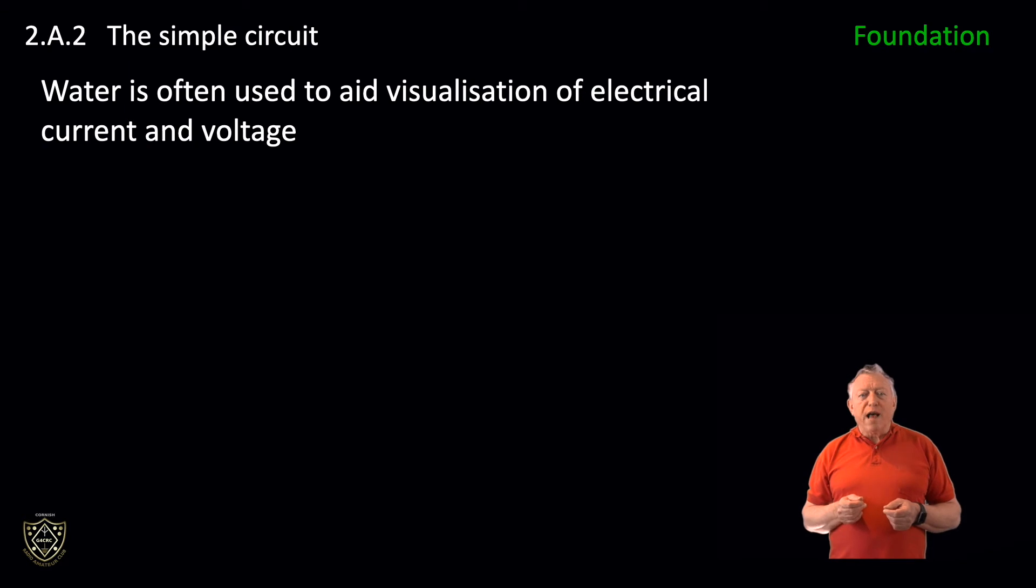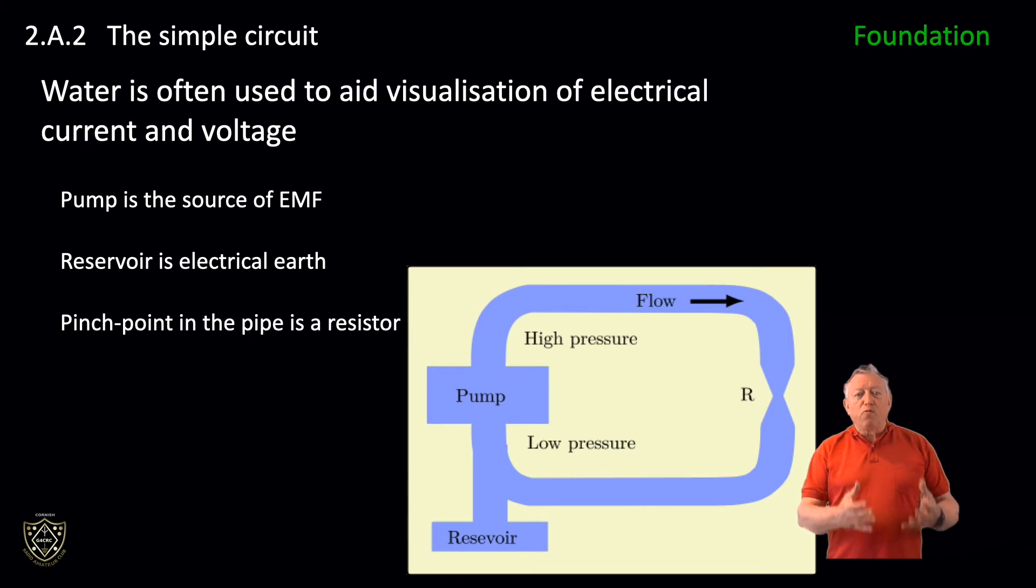Let's look at the water analogy. Water is often used to aid visualization of electrical current and voltage. The picture shows a pump drawing water from a reservoir and pushing it around a pipe with a constriction. In this analogy, the pump is the source of EMF, electromotive force. The reservoir is electrical earth and the pinch point in the pipe is a resistor.